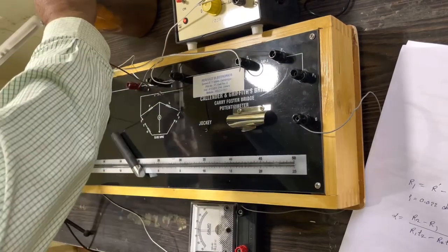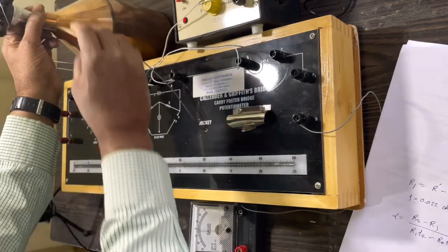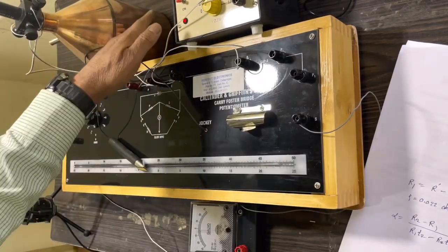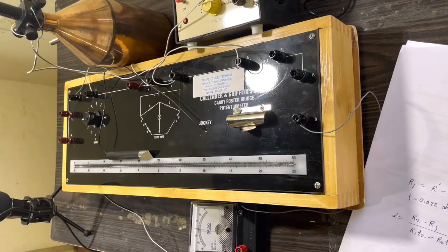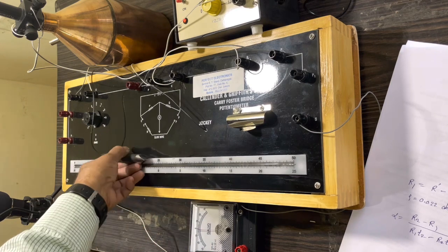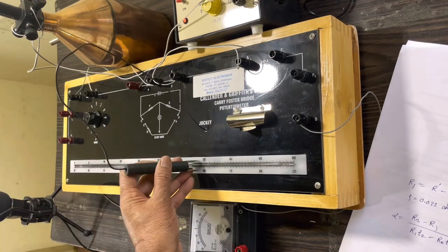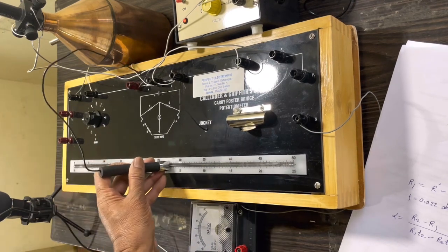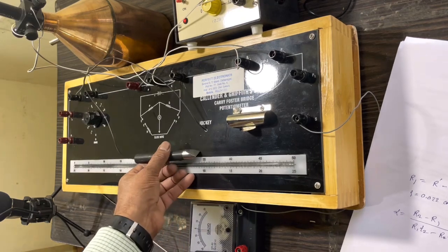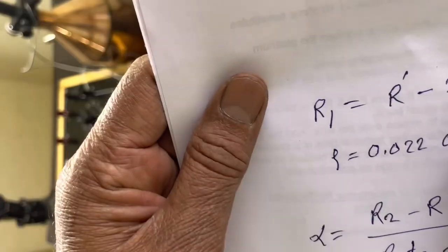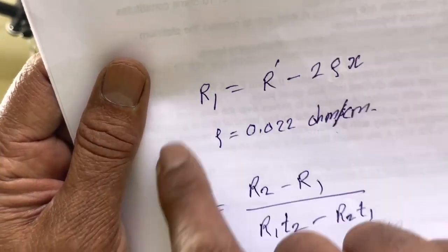You insert the platinum resistance thermometer inside the steam chamber. Add 50 percent water in the steam chamber and heat it to boil the water, so that the temperature of the boiled water will be 100 degrees Celsius. Then we have to obtain the balance point for the temperature of 100 degrees centigrade.